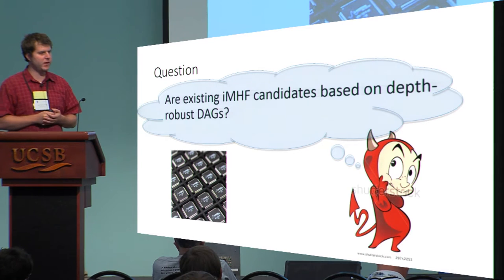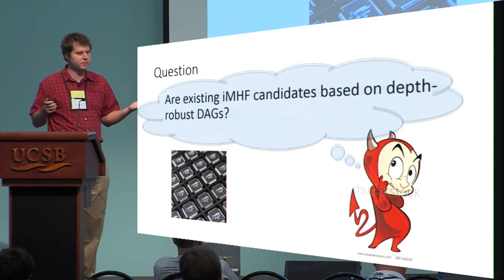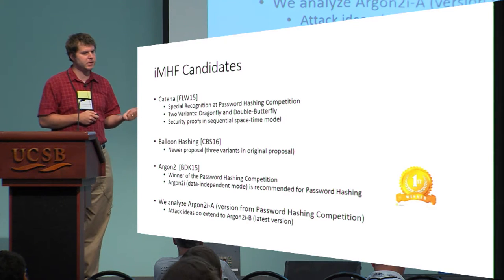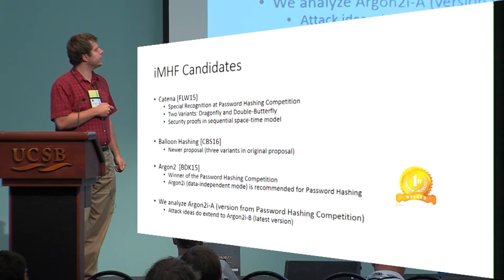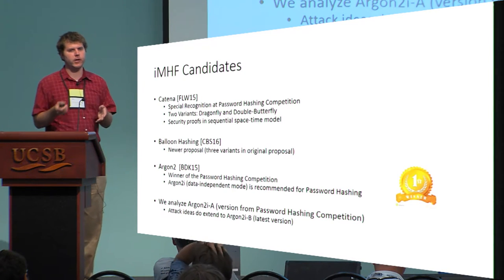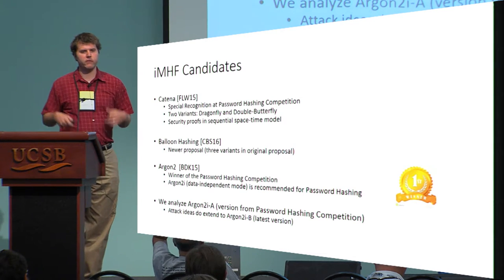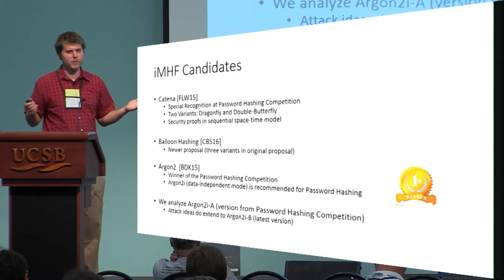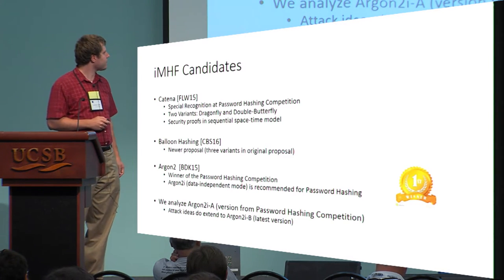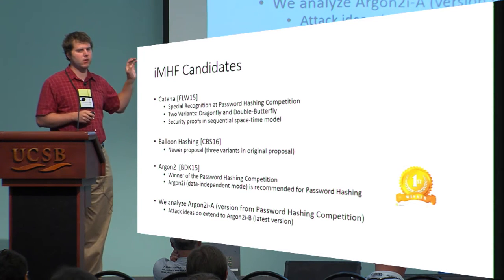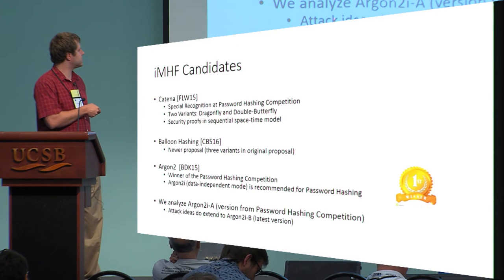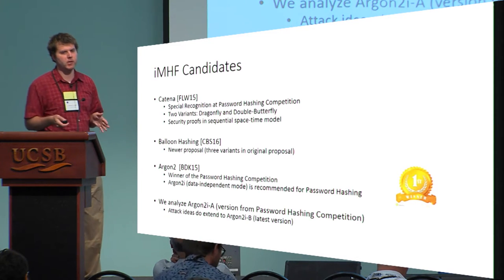This motivates the natural question: are existing iMHF candidates based on depth robust graphs? We'll consider three candidates: Catena, which received special recognition during the password hashing competition, with two variants; a newer proposal with three variants, two of which are similar to Catena in terms of depth robustness and the last similar to Argon2; and Argon2, the winner of the password hashing competition. In particular, Argon2i — the data-independent mode — is the one recommended for password hashing. In the paper we analyze Argon2iA from the competition, and our attack ideas do extend to Argon2iB, the newest version.